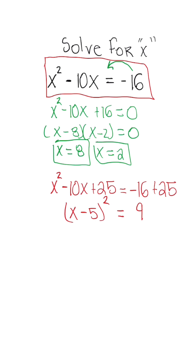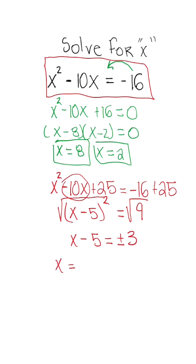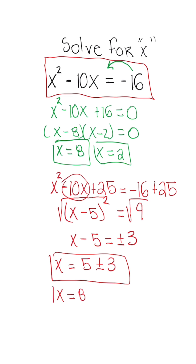All you need to do is take your B term divided by 2. Now we're going to get rid of the exponent by taking the square root of both sides. So x minus 5 is now equal to plus or minus the square root of 9, which is 3. So x is equal to 5 plus or minus 3. That means x is equal to 5 plus 3, giving x equals 8, and x is equal to 5 minus 3, giving x equals 2.